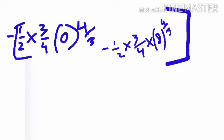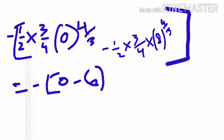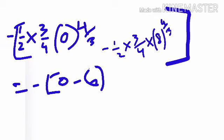Now putting in the limits: the upper limit gives 0 (since 0^(4/3) equals 0). For the lower limit with t equals 8: 8^(1/3) equals 2, and 2^4 equals 16, so 8^(4/3) equals 16. Therefore the expression gives minus (1/2) times (3/4) times 16, which equals minus 6. So the final answer is minus 6.